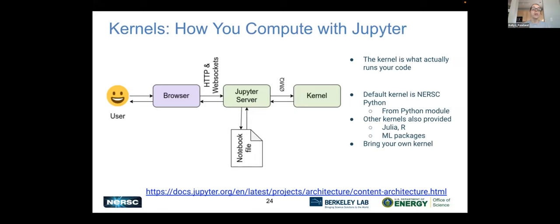When you log into Jupyter and open a notebook, the default kernel is the NERSC Python from the Python module. We also provide other kernels for users' convenience — we have Julia kernels, R kernels for people to use R in their notebooks, and several kernels set up for machine learning packages. Things like TensorFlow and PyTorch — you can just select one of those kernels and get going. Or, a very popular option that a lot of people like is to bring their own kernel, and we highly encourage users to do this.